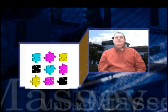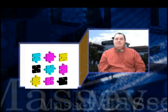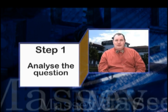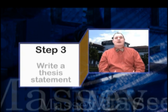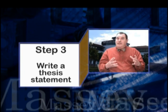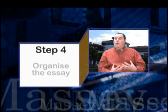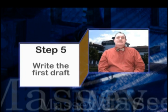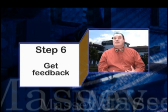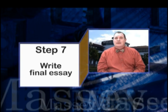With any big project, it's always best to break it down into smaller tasks. In the process of writing an essay, we can break the process down into the following steps. Step 1 is to analyze the assignment question. Step 2 is how to do the research. Step 3 looks at how to write a thesis statement. Step 4 is to start organizing the essay. Step 5 is to start writing our first draft. Step 6 is to get some feedback and make changes based on that feedback. And Step 7 is to make revisions and write our final essay before submitting it.